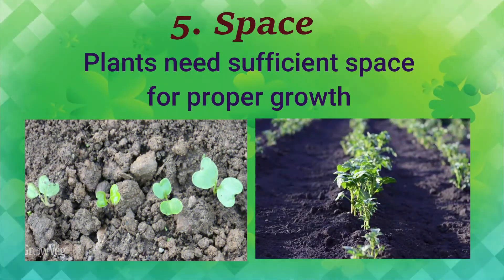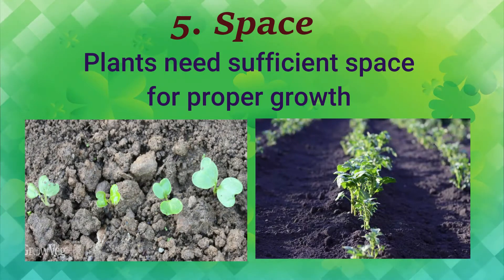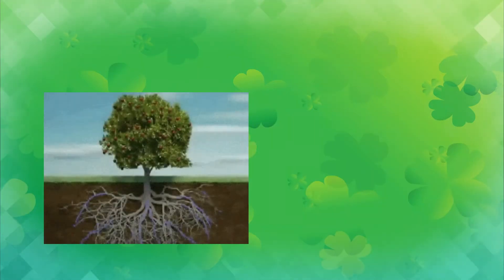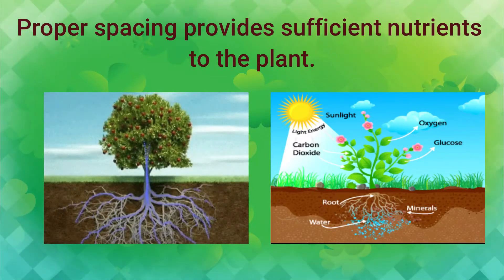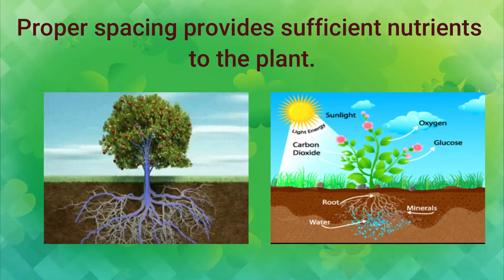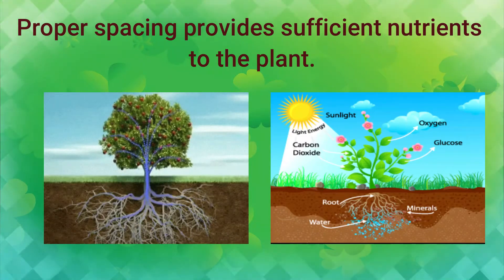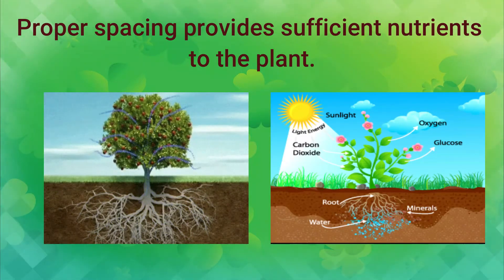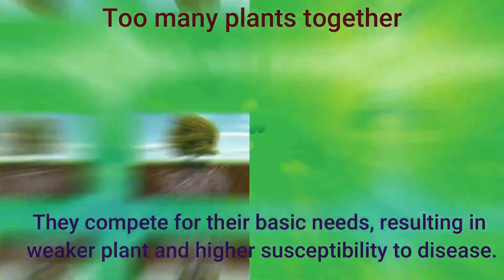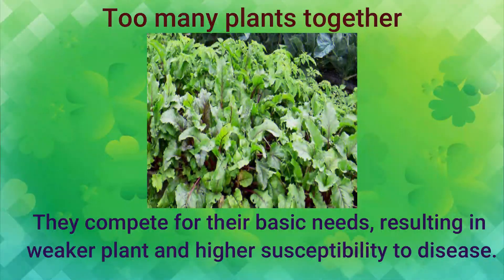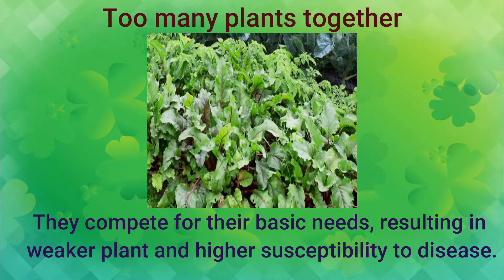The next basic need is space. Plants need sufficient and proper spacing for proper growth, as plant roots spread inside the soil to absorb water and nutrients. If too many plants are grown together, they may get insufficient nutrients, which affects their growth and development. They compete for their basic needs, resulting in weaker plants and higher susceptibility to disease.